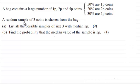Now a random sample of 3 coins is chosen from the bag and first of all we've got to list all the possible samples of size 3 with median of 5p, and that's for 2 marks. Then in part B we go on to find the probability that the median value of the sample is 5p, and that's for 4 marks.